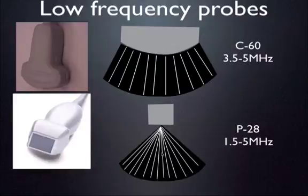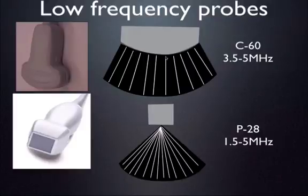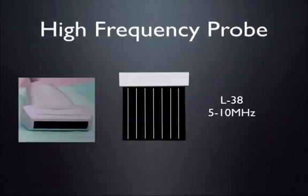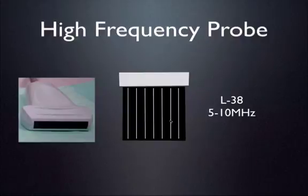One key difference between the cardiac and abdominal probes: the cardiac probe is a phased array probe, meaning sound waves originate from one point and are steered out into space, rather than originating from a wide surface area in parallel fashion like the abdominal probe. The high frequency linear probe — the L38 — is 38 millimeters across and operates at 5 to 10 megahertz, with multiple channels producing parallel sound waves. Being high frequency, it offers shallower penetration but much higher resolution.